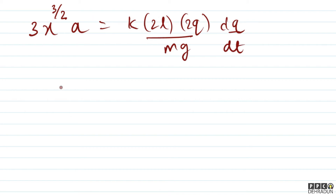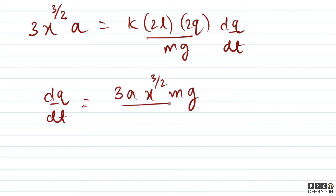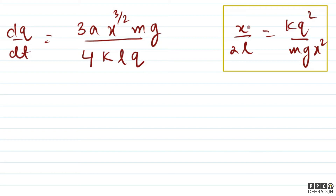तो यहाँ से dq/dt की value आ जाएगी: dq/dt = 3a × x^(3/2) × mg / (4kql)।